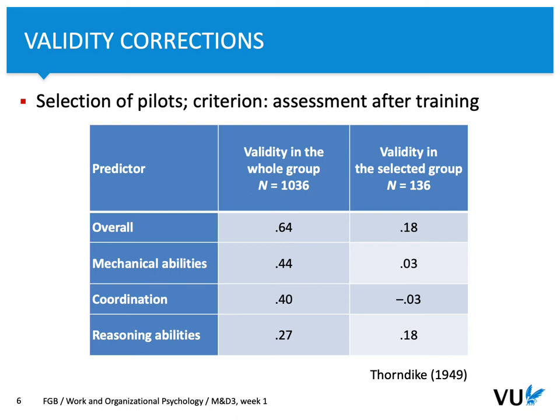What does it mean? In some cases, when we select a smaller group out of a larger pool of candidates, we can find different correlations between our predictor and our criterion. For mechanical abilities, the relationship was really, really low — it was 0.03. For coordination, it was even negative. For reasoning abilities, it was rather small. That shows that corrections for restriction of range may be necessary in order to adequately assess validity of specific measures.